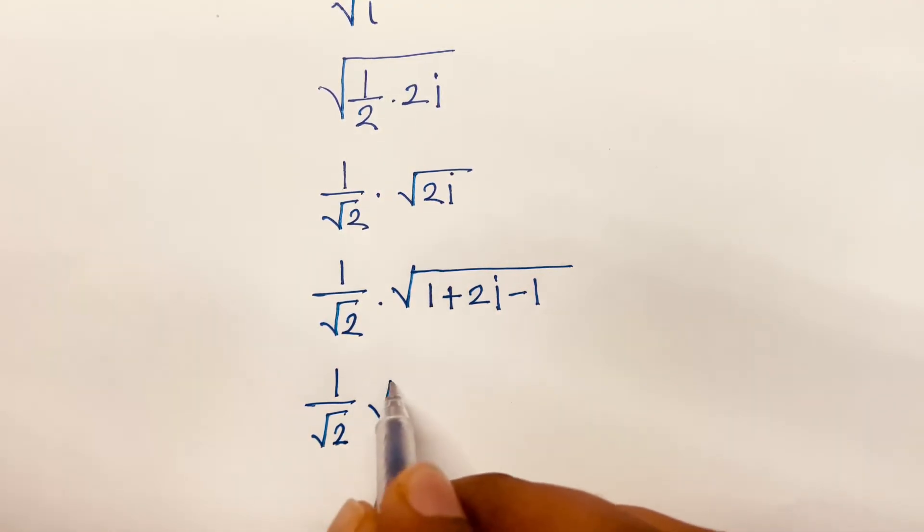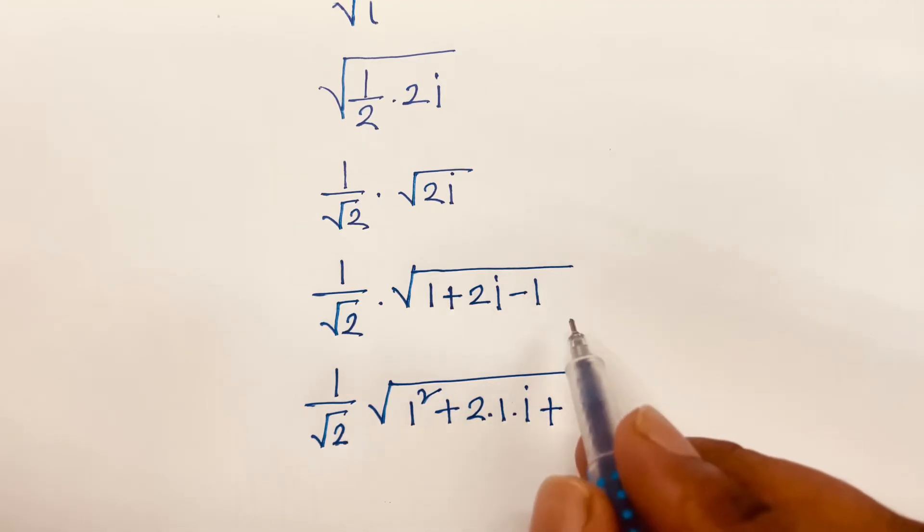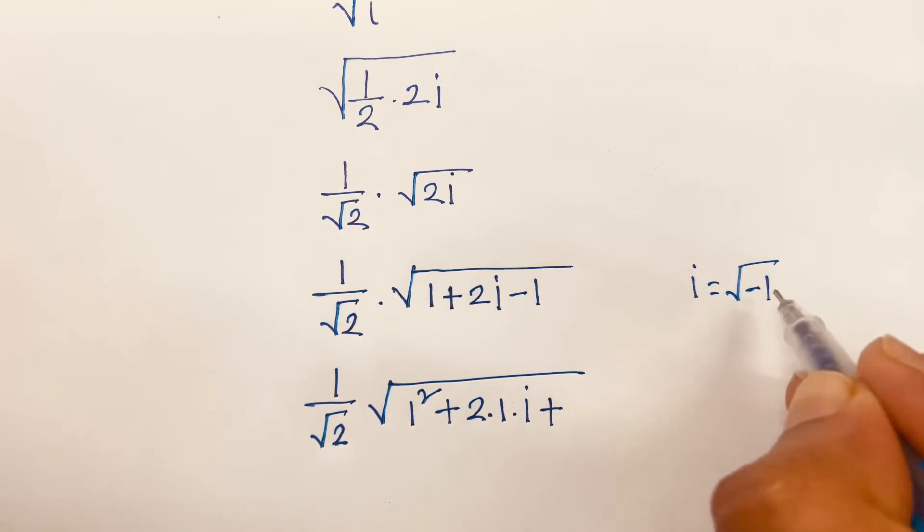Square root 1 will be 1 square, there is no change, plus 2 times 1 times i plus, look, minus 1. You know that i is equal to square root minus 1, and i square is square root minus 1 whole square.